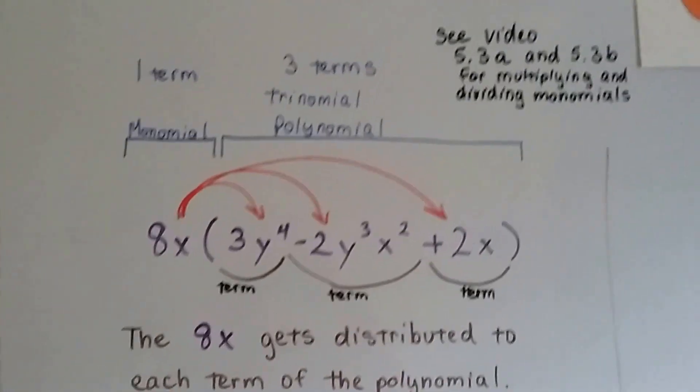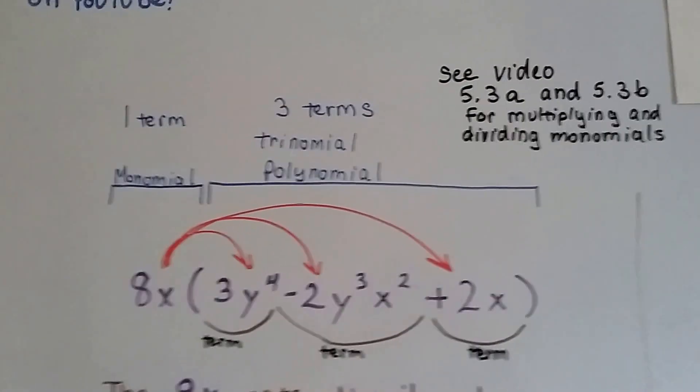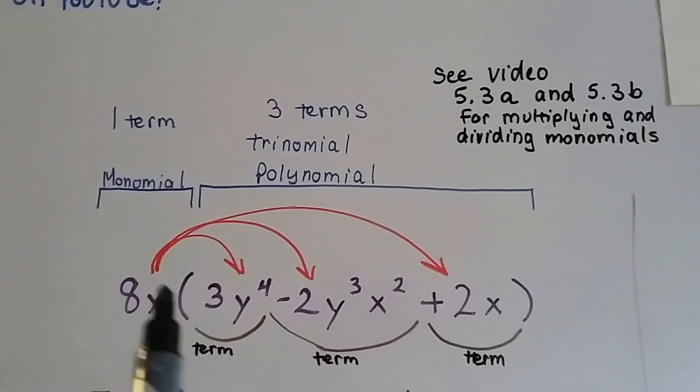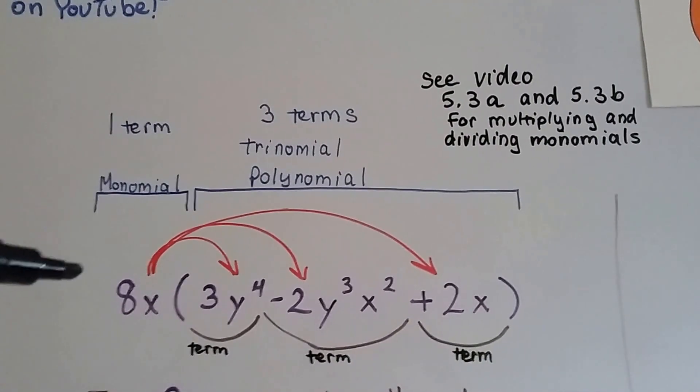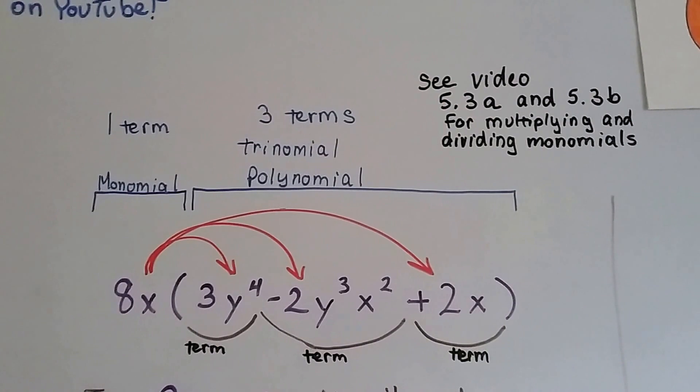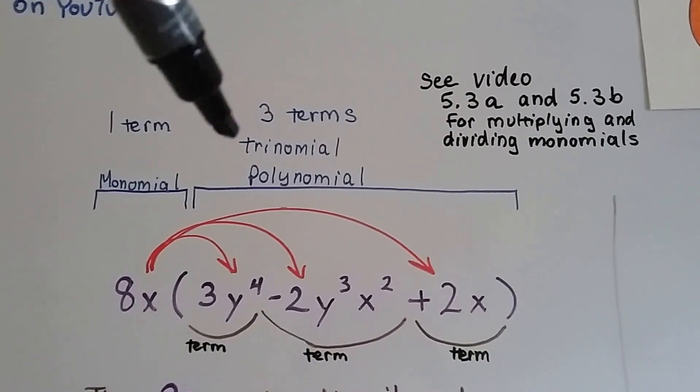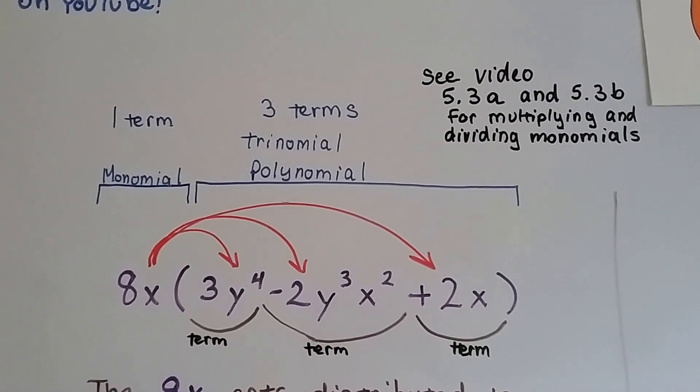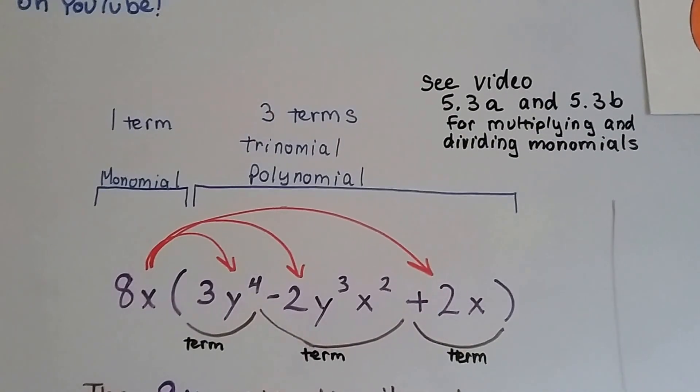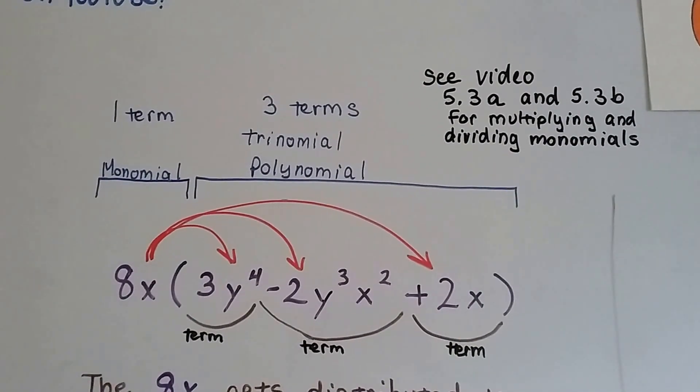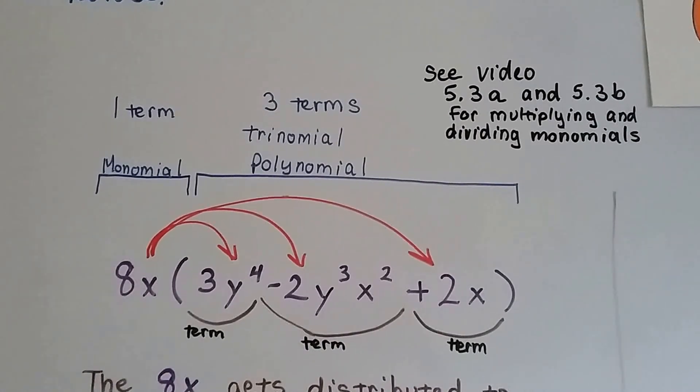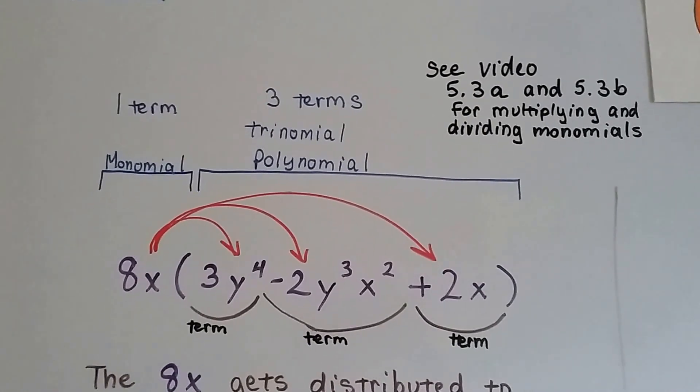So take a look at this one. This is a very big polynomial. It's a trinomial. We've got an 8x for a monomial. That's one term. And we're multiplying it to a polynomial that's a trinomial. It's got three terms. And if you're not quite sure how to multiply and divide monomials, go back to 5.3a and 5.3b. There's going to be a link in this description for you to go there.